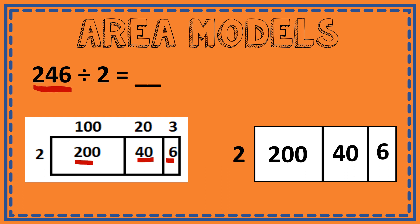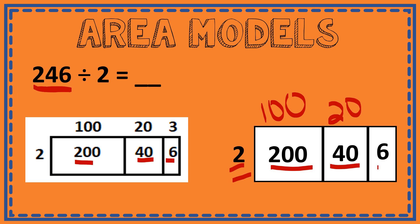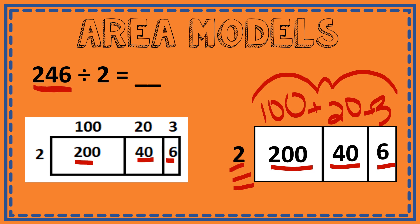So you're going to divide with these numbers broken up, and the division becomes easier once you break your numbers down. 200 divided by 2 is 100, 40 divided by 2 is 20, and 6 divided by 2 is 3. Remember, these numbers are called my partial quotients, and when I add them together I get my final answer of 123.